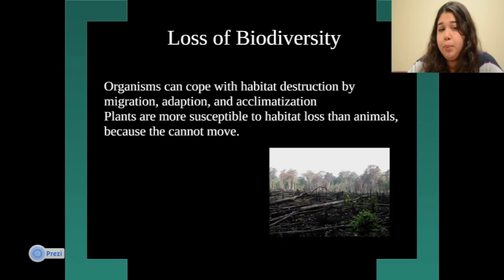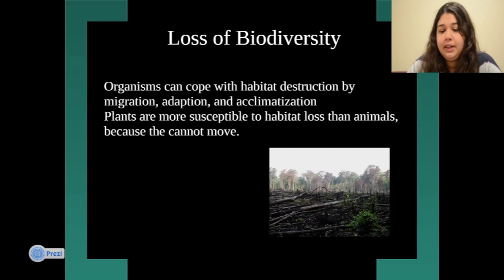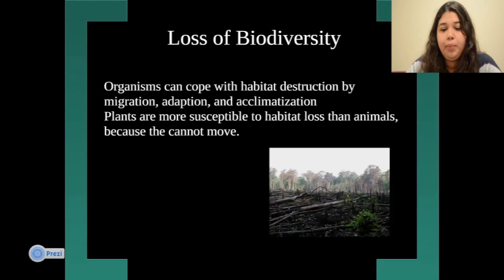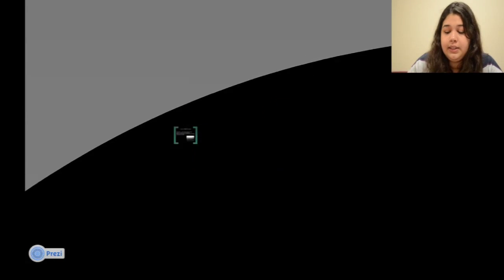Plants are more susceptible to habitat loss than animals because they can't move. There's a picture of deforestation showing trees being cut down. Plants aren't able to move, adapt, or migrate like animals, but reducing plants and biodiversity around us still affects us as well.